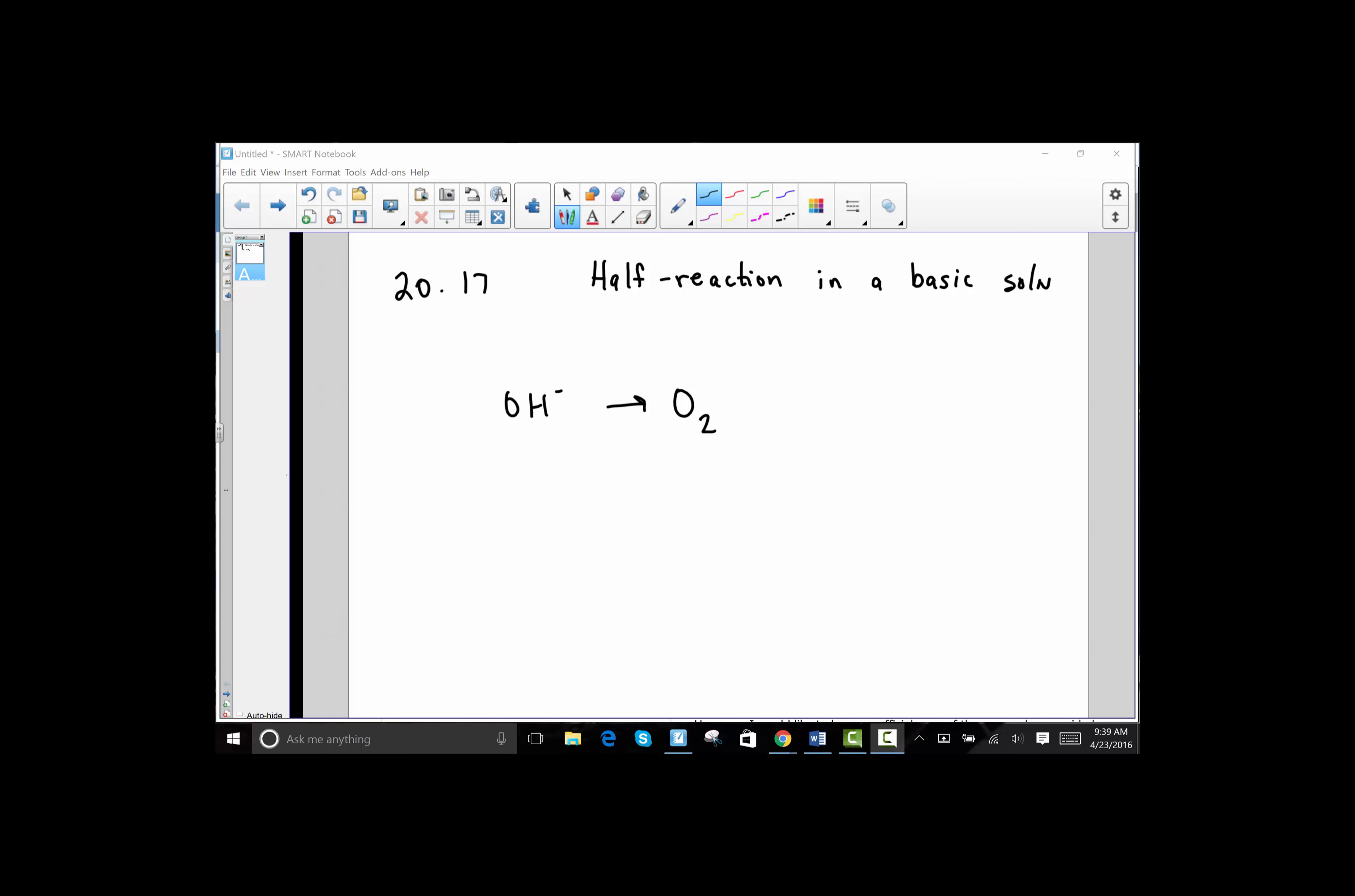Rule three tells us to balance the oxygens by adding water. We see on the left side of the equation that we have one oxygen and on the right side we have two oxygens. So my first sequence of balancing this will be to add to the left side one water. When I add one water, I've now balanced the oxygens.